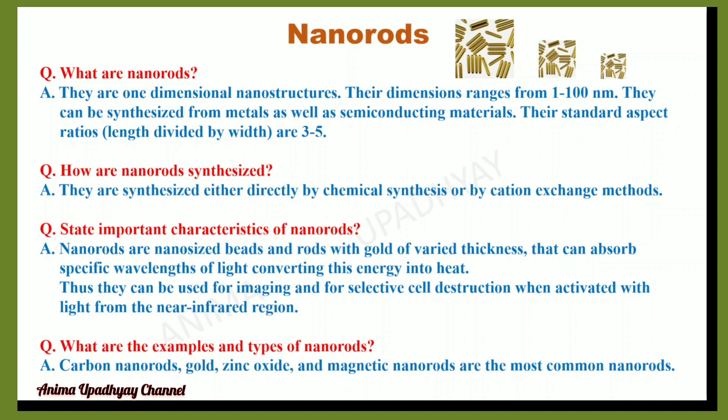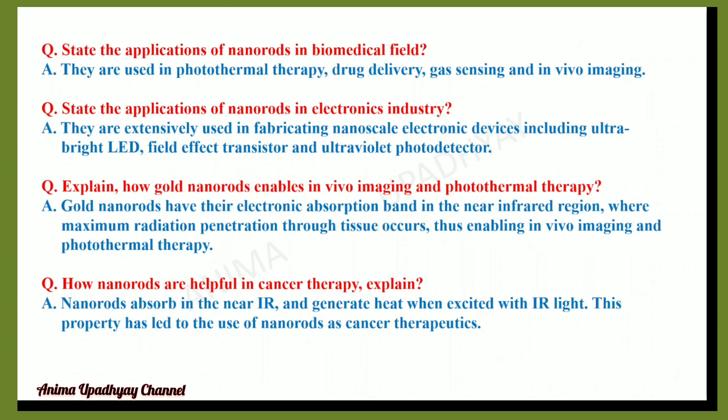What are the examples and types of nanorods? They include carbon nanorods, gold, zinc oxide, and magnetic nanorods. The applications of nanorods in the biomedical field include photothermal therapy, drug delivery, gas sensing, and in vivo imaging — that is, within the cell.